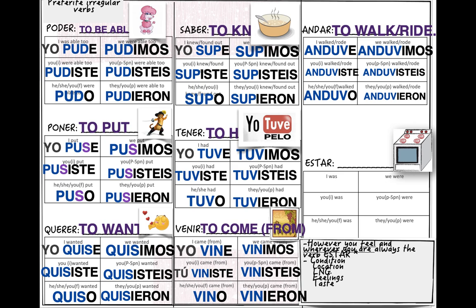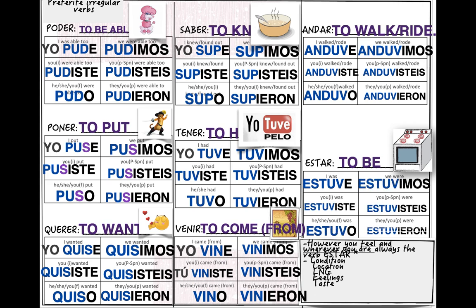'Estar' (to be) — the mnemonic is a stove. The root changes to 'estuv-': yo estuve, tú estuviste, él estuvo, nosotros estuvimos, vosotros estuvisteis, ellos estuvieron. The picture of the stove helps you remember: 'I turned on the stove.' The root is 'estuv-.'